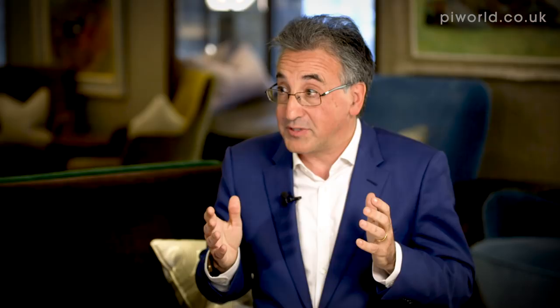I'm often looking at companies generating returns of around 20 to 30% per annum. BioVentix is at 56%, and if you strip out the cash which they often don't need anyway, it's 142%. That compares to YouGov at around 19% and 27% respectively. Do you know any other company with that level of return? Reckitt Benckiser has a very high return on tangible assets — around 60 to 70% when I last looked.